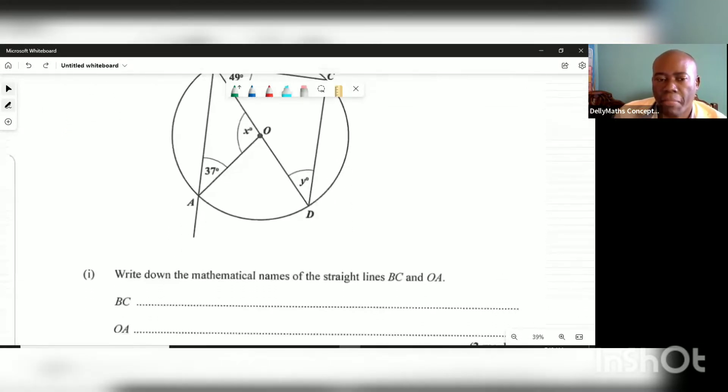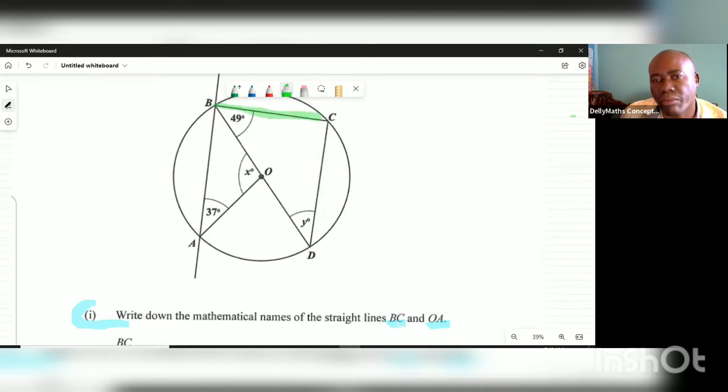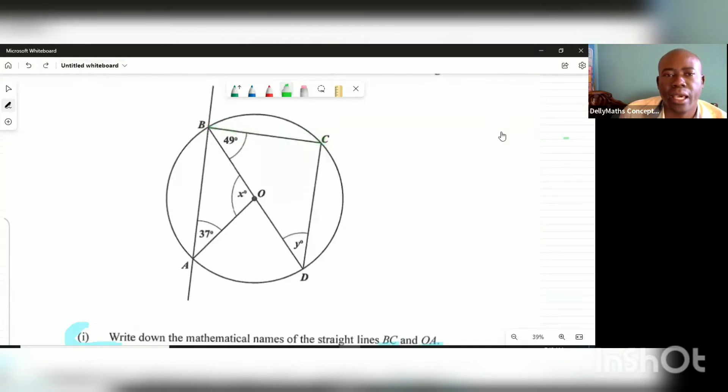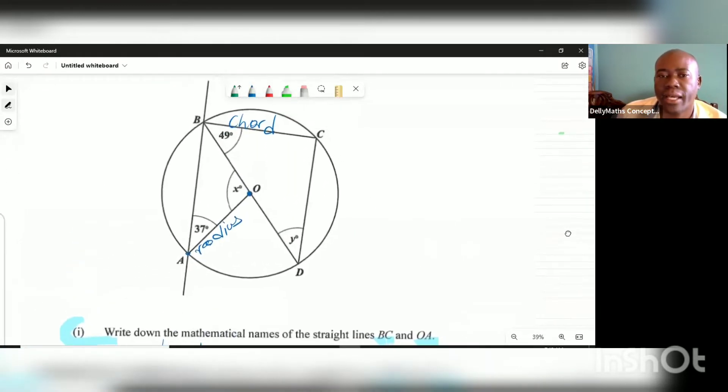Let's proceed to the questions. The first question says, write down the mathematical names of the straight lines BC and OA. Here's BC. So BC is simply a chord. A chord comes from one point on the circumference to another point on the circumference. And OA is a radius. So we have a chord and a radius. We would have collected those marks.